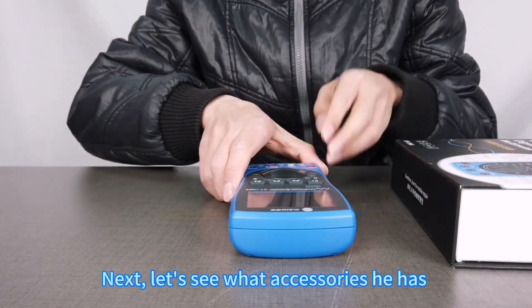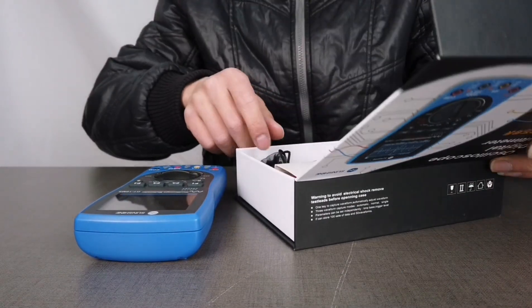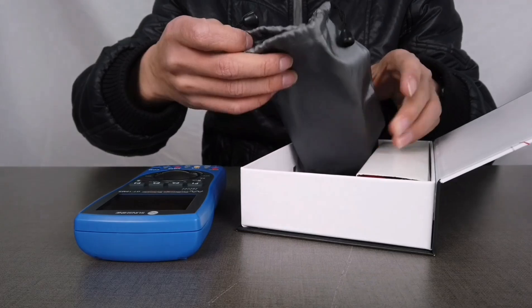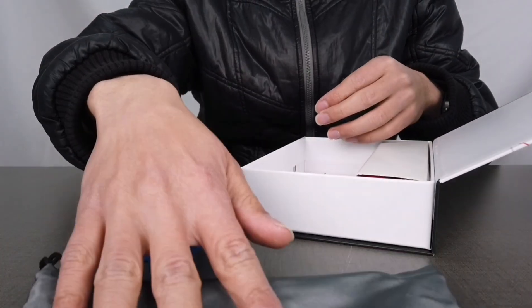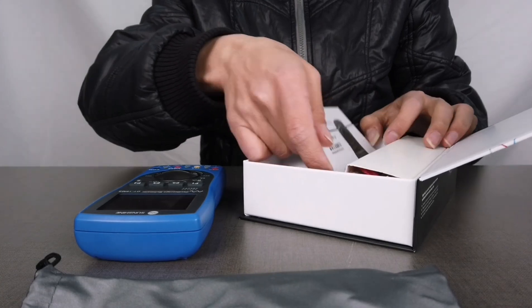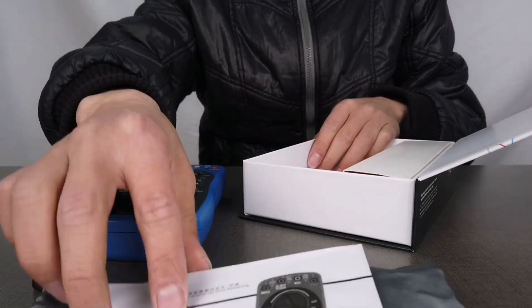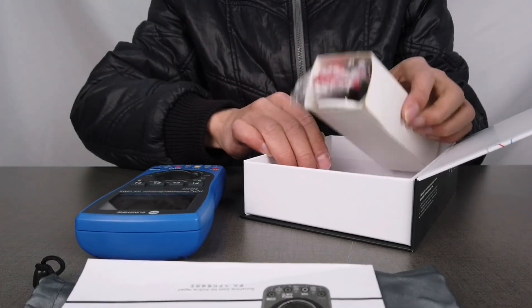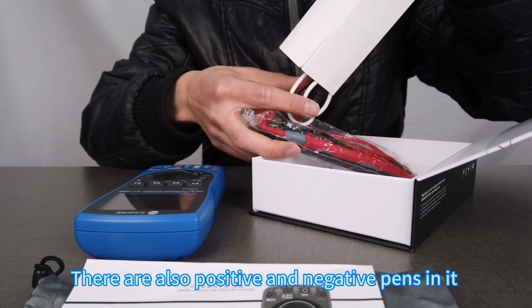Next, let's see what accessories it has. There's a carrying bag for the multimeter, an English instruction manual, and positive and negative pins.